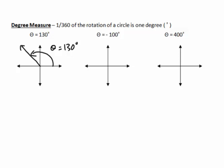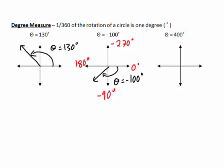For negative 100 degrees, all we do is go backwards — go in the opposite direction. There is our terminal arm, and theta in this case is negative 100 degrees. When we go negative, this is negative 90, just going backwards around the circle: negative 180, negative 270, and eventually back to zero or negative 360.